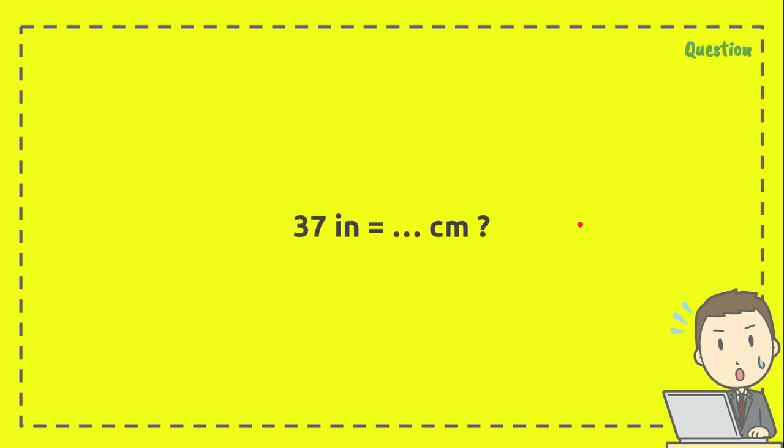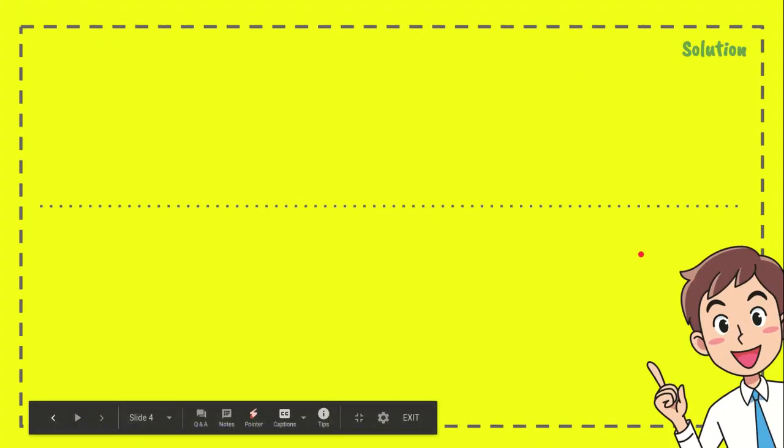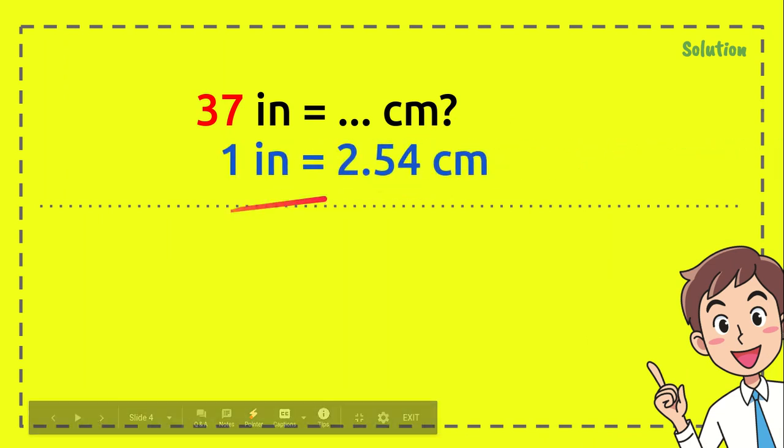Here is the question: 37 inches equals how many centimeters? This is the solution part. First, write the question here, and we're going to use the formula again - we're going to put it here.